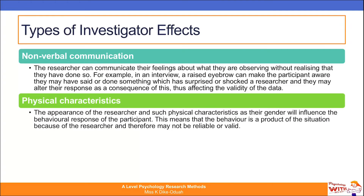Physical characteristics — the appearance of the researcher, such as their gender, will influence the behavioural response of the participant, meaning the behaviour is a product of the situation and may not be reliable or valid. Participants can behave differently depending on the gender or race of the researcher. Even the relationship they have with the researcher may alter their behaviour — a good example would be students participating in research for their teacher, which may cause some alteration in their behaviour.